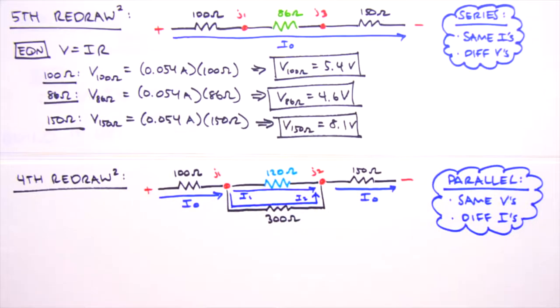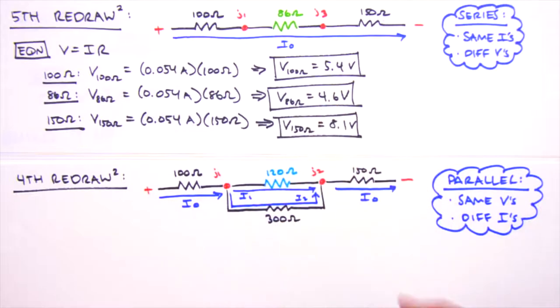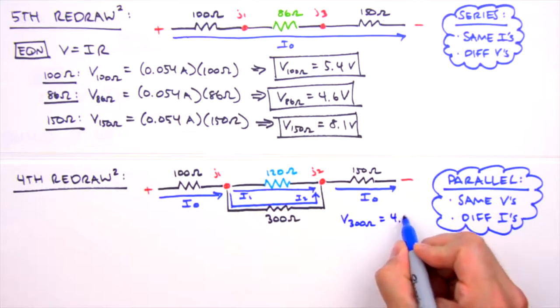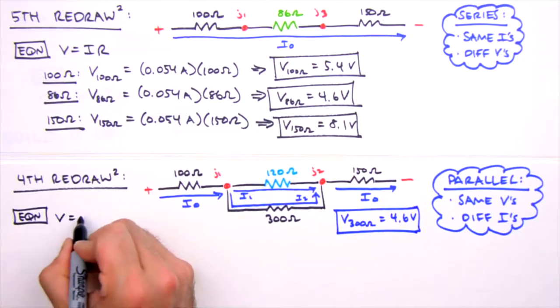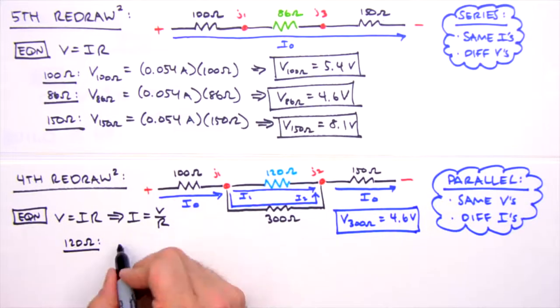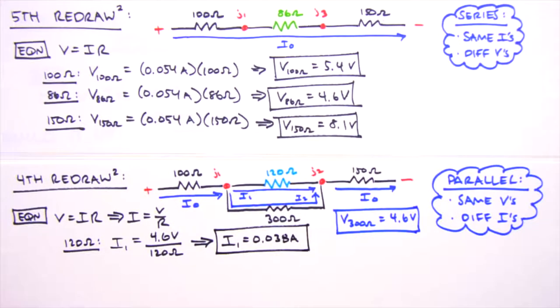To determine values for I1 and I2, we'll use Ohm's law. But first we need voltages for these two resistors. We know that the voltage drop across the 86 ohm resistor is 4.6 volts, and since it represents parallel resistors, that means the voltage drop across each resistor is the same, 4.6 volts. And we'll box up this result to save for our solutions table. Solving Ohm's law for current, we determine that the current through the 120 ohm resistor, that is to say I1, equals 0.038 amps. Similar calculation for the 300 ohm resistor yields a value of 0.015 amps for I2.